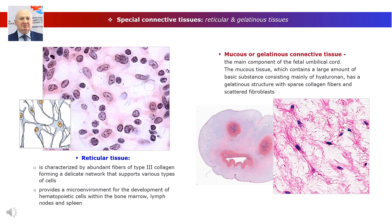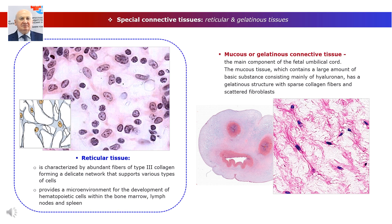Reticular tissue is characterized by abundant fibers of type 3 collagen forming a delicate network that supports various types of cells. This collagen is also known as reticulin and is produced by modified fibroblasts, often called reticular cells, which remain associated with the fibers and partially cover them. The star-shaped reticular cells and reticular fibers form a complex network through which interstitial fluid or lymph and wandering cells from blood pass continuously. Reticular tissue provides a microenvironment for the development of hematopoietic cells within the bone marrow, lymph nodes, and spleen.